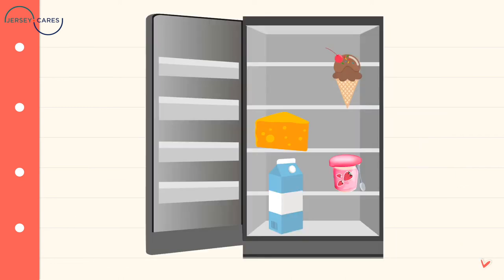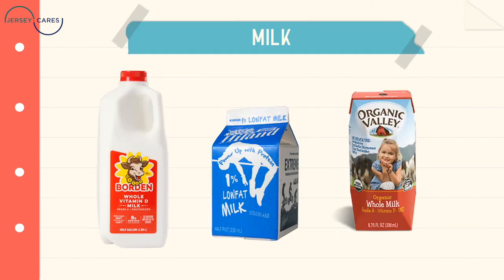Here's an example of a fridge, and we're going to go through each of the pictures shown. On the second shelf we have an ice cream cone, then a piece of cheese, then yogurt, and milk. We're going to start with milk — you might have had it at school in the cafeteria, and the other ones shown are just other types of whole milk.